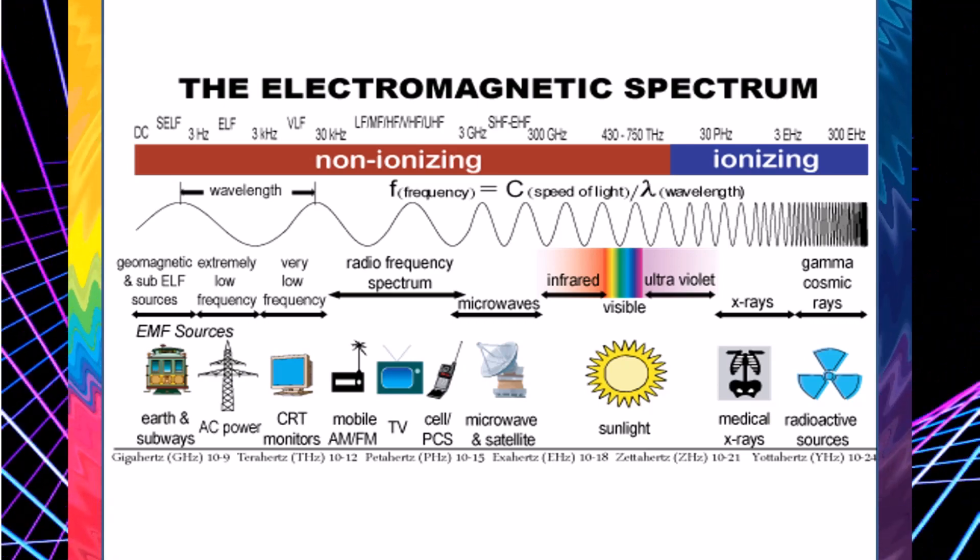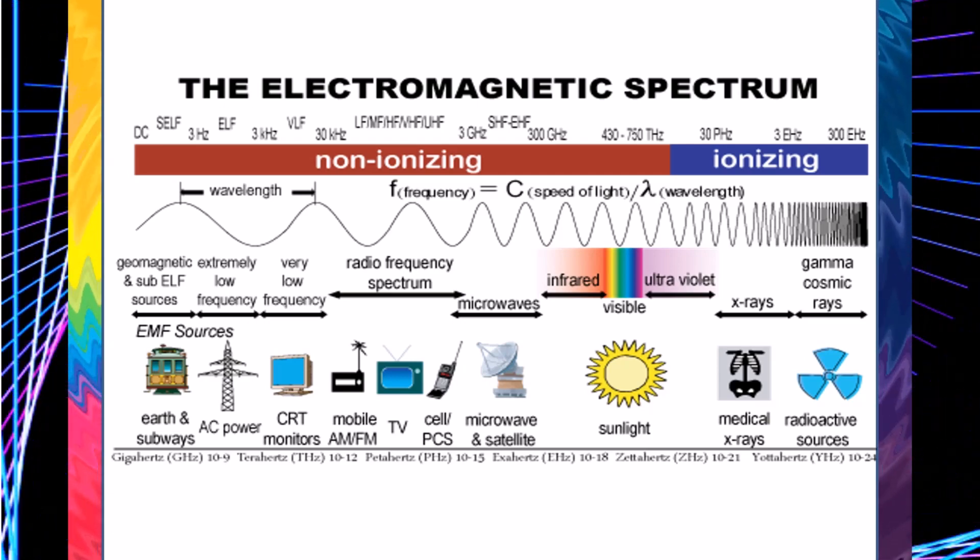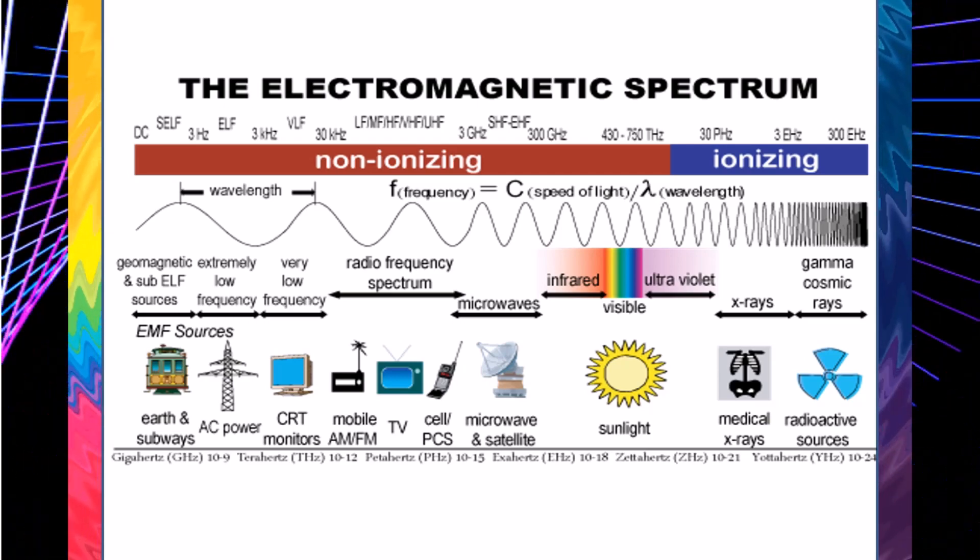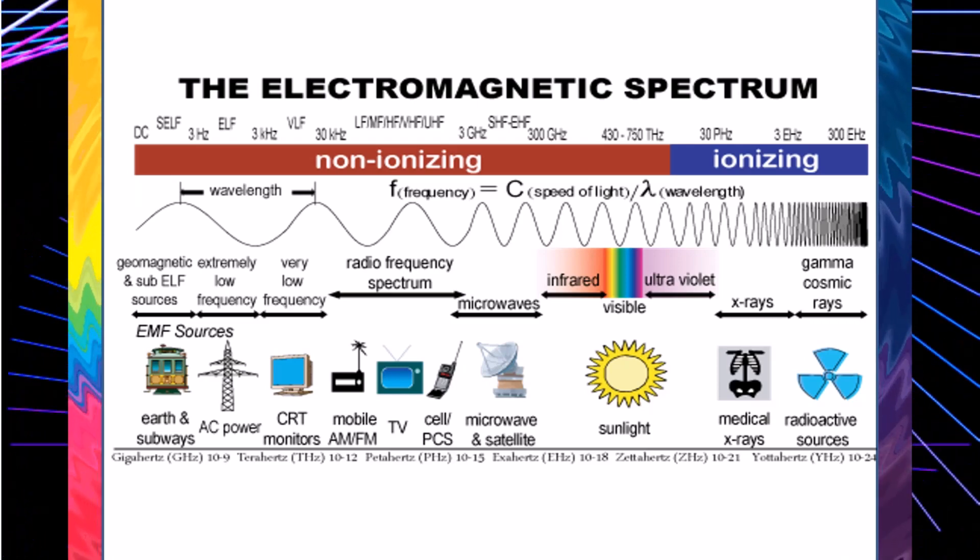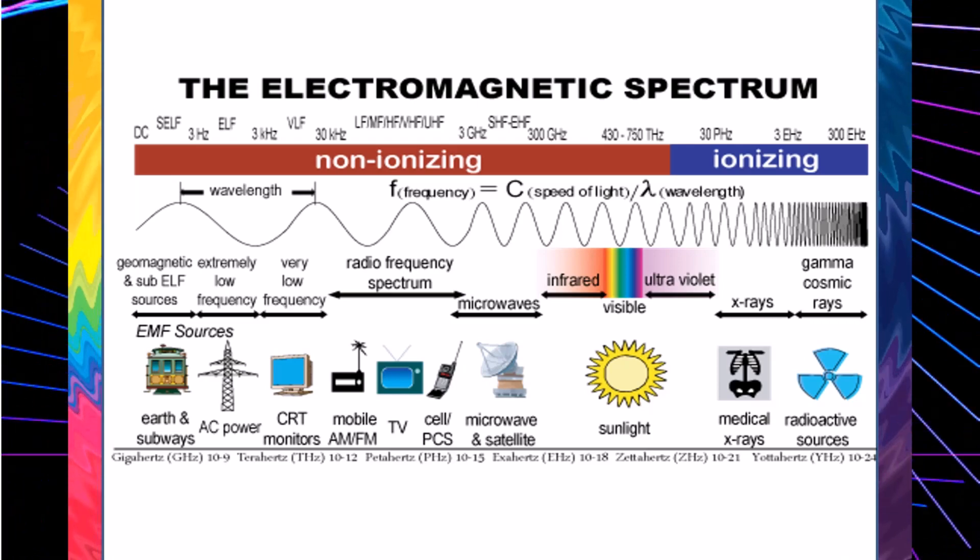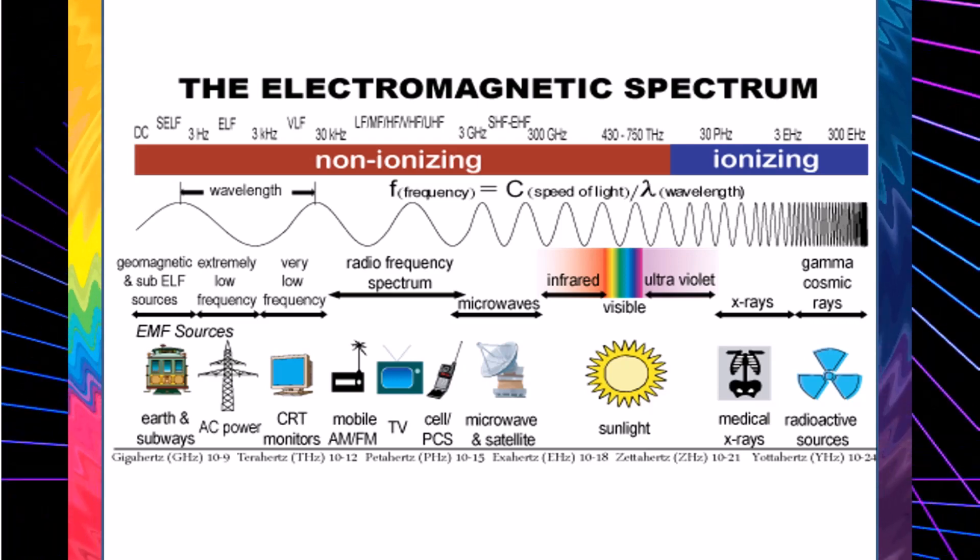Radio waves are used for communications and radar. Microwaves are used to cook your food. Infrared waves are used in remote controls and are emitted from all warm objects, allowing them to be used to create heat-sensitive cameras.